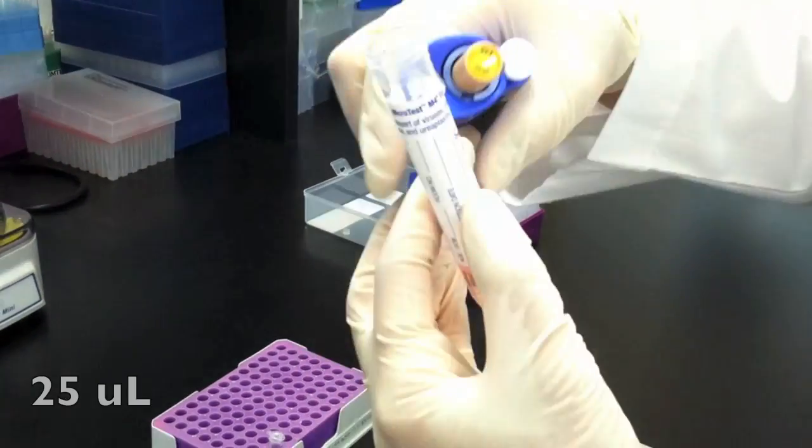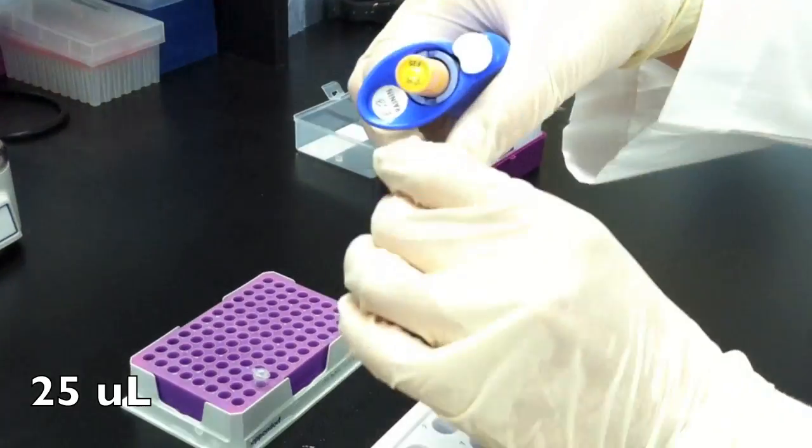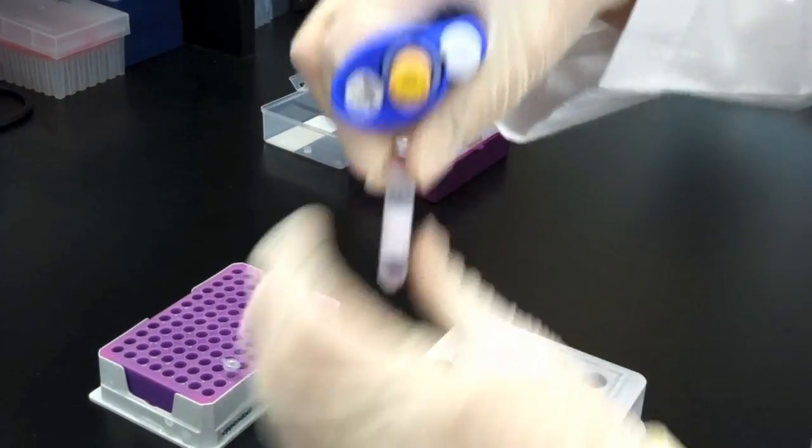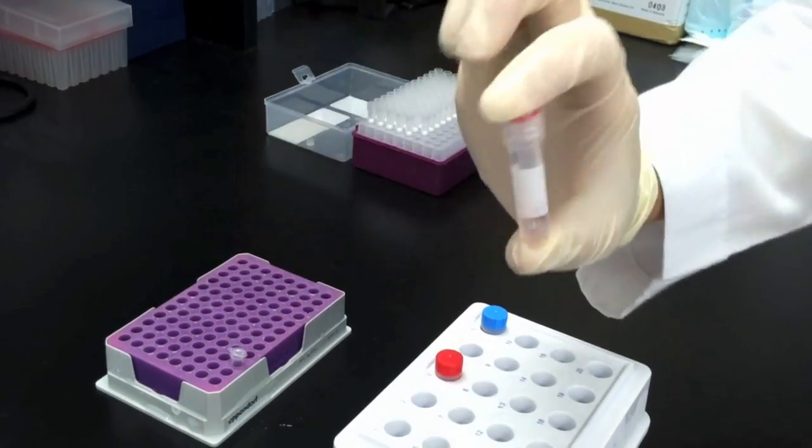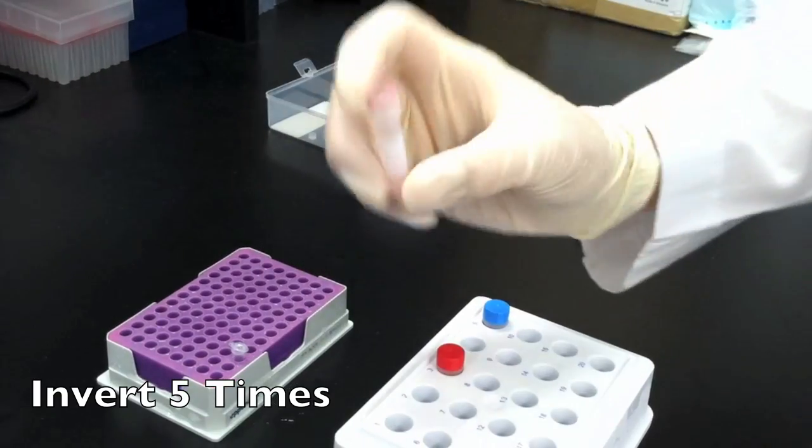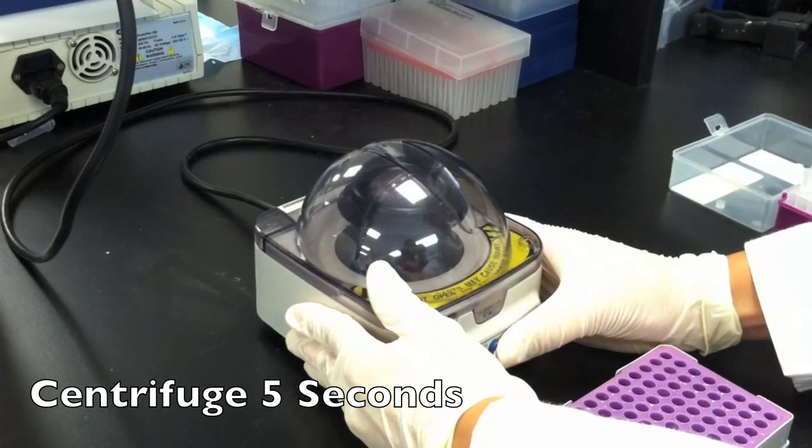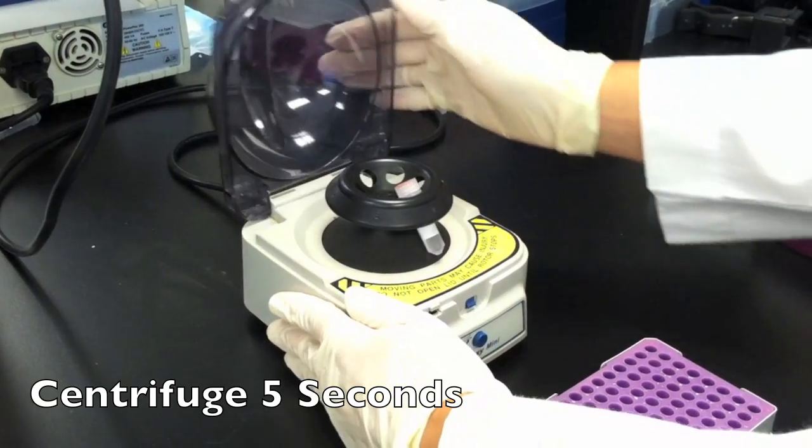Transfer 25 microliters of viral transport medium from the collection vial to a corresponding dilution tube. Mix the solution well by inverting the tube 5 times. Centrifuge the dilution tube in a mini microcentrifuge for approximately 5 seconds.